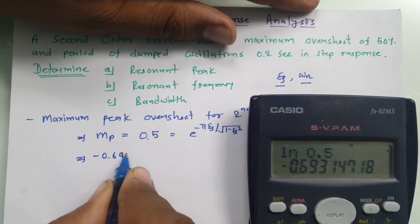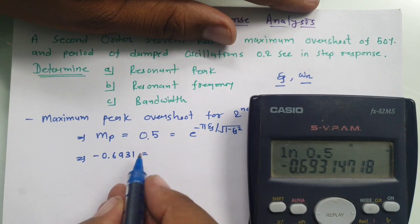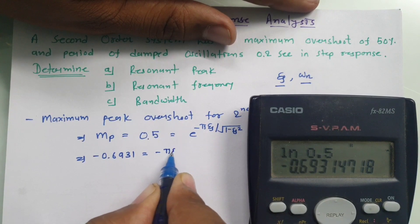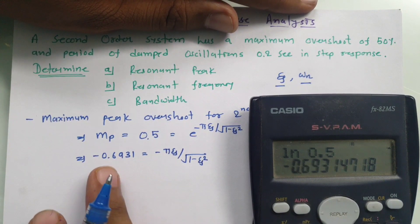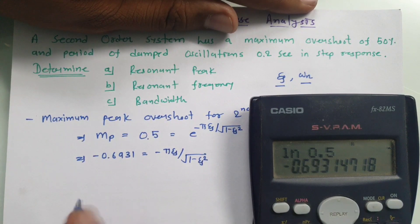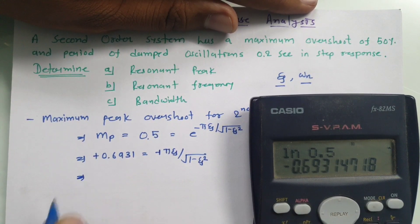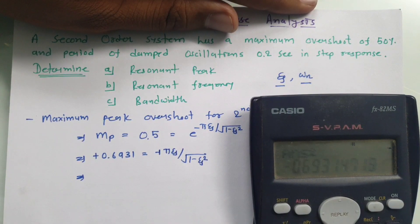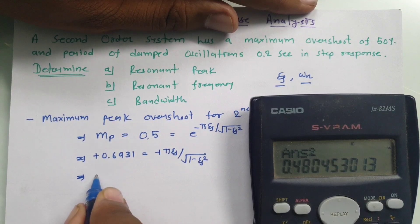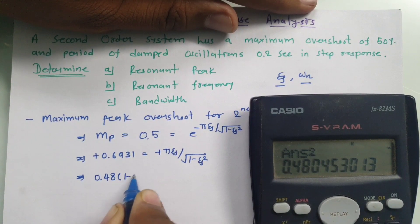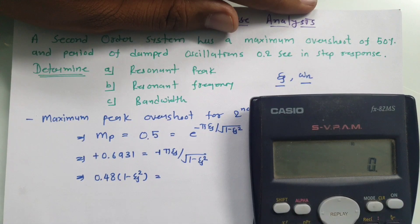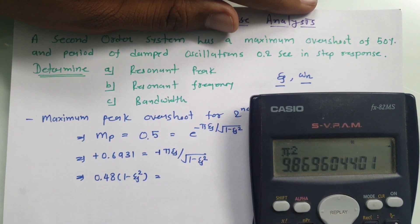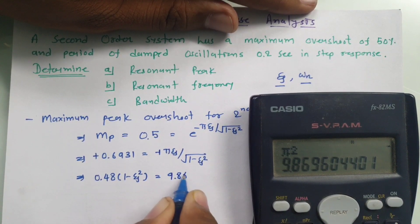We now square both sides of the equation. The left side gives (−0.6931)² = 0.48. The right side gives π²ζ² / (1 − ζ²), where π² = 9.86. Rearranging: 0.48 × (1 − ζ²) = 9.86ζ².